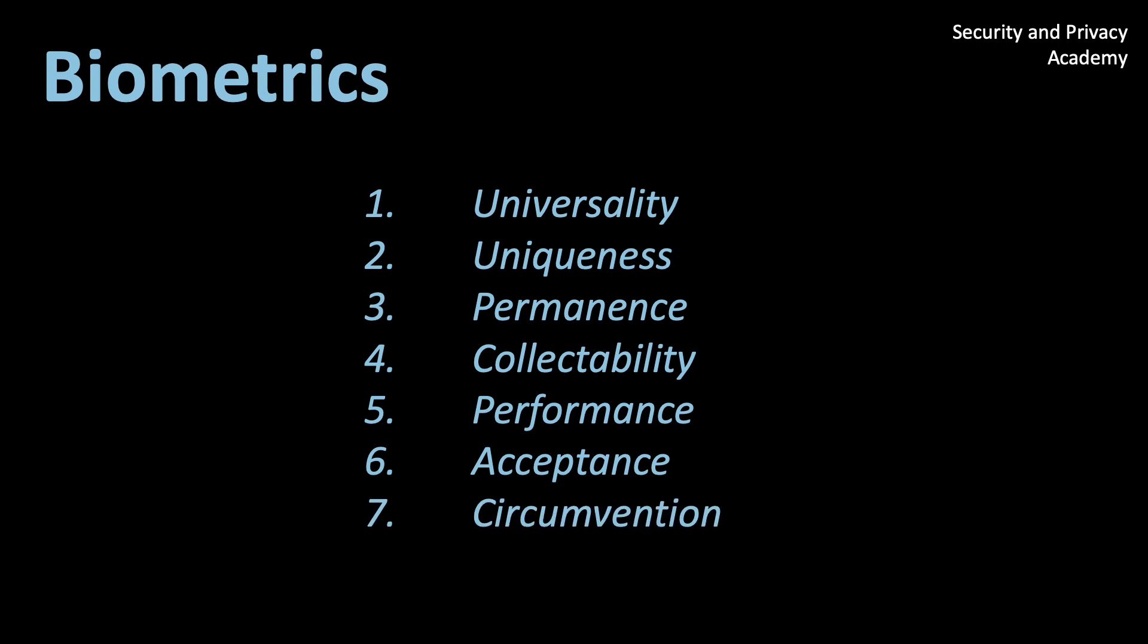Circumvention finally means that it is impossible, or at least very hard, to fake the biometric feature. As you probably realized already, the biometric authentication method you are probably using right now, or in your daily life, does not fulfill all these criteria. Usually, that is because of point number five. The authentication method needs to be fast and performant in order to be accepted, and are thus prone to, for example, forging fingerprints.